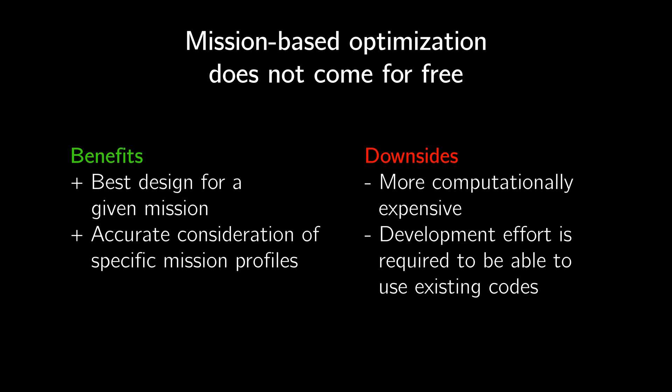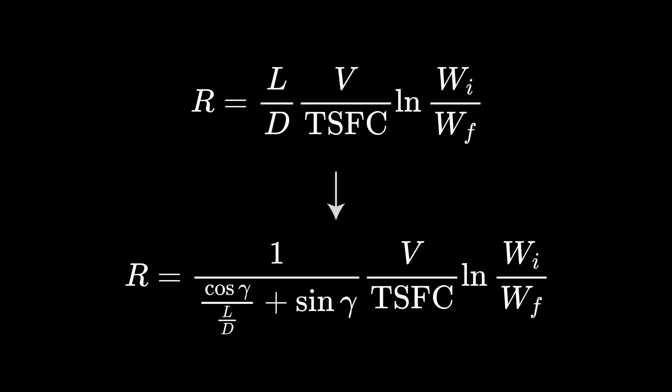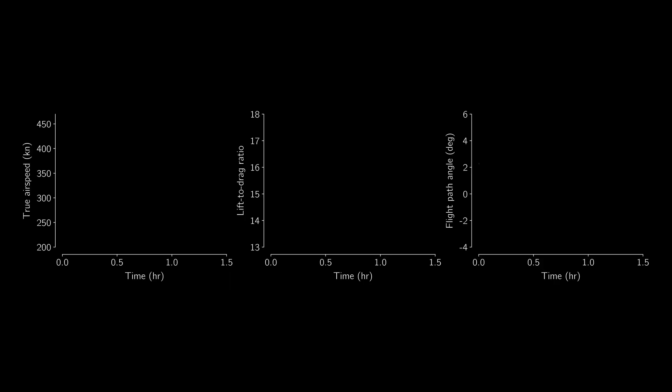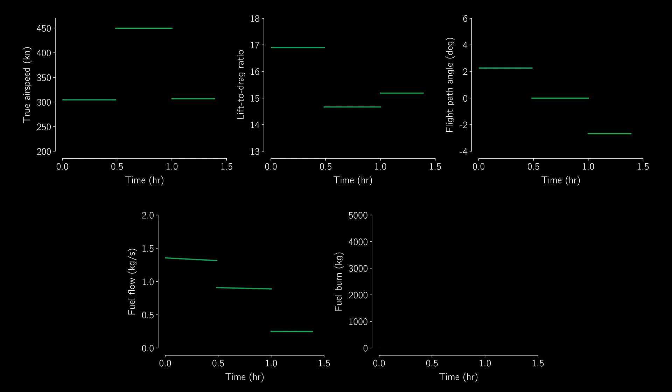Instead of using the original Breguet range equation, we derive one with slightly different assumptions. In climb, a component of weight acts in the same direction as drag, counteracting the thrust. By incorporating the slightly different force balance into the derivation, we find a more general equation that can be used with different flight path angles. This new equation more accurately captures the trends in fuel burn with respect to weight and performance at different flight conditions. Now that we have a better fuel burn approximation, we can use it sequentially for different flight segments. We perform one aerostructural analysis in the middle of each flight segment and assume that the airspeed, lift-to-drag ratio, and flight path angle stay constant within each segment. We then estimate the climb fuel burn using the modified Breguet range equation.